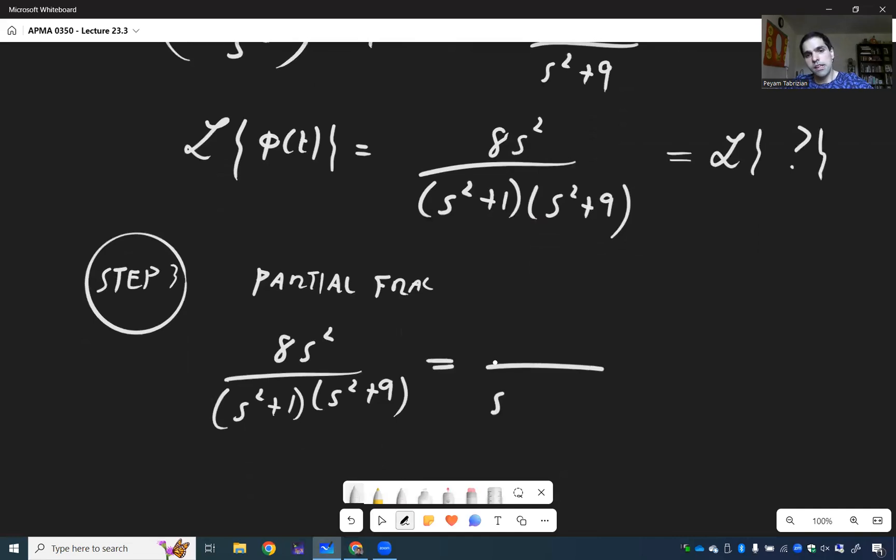So something over s² + 1 and something over s² + 9. So as + b, cs + d.